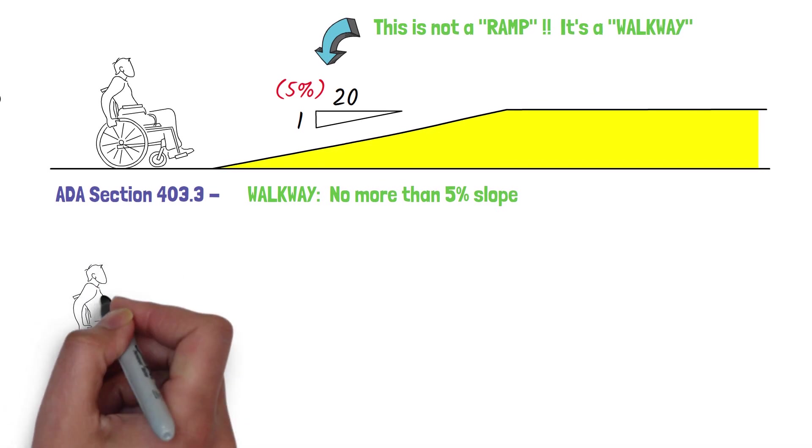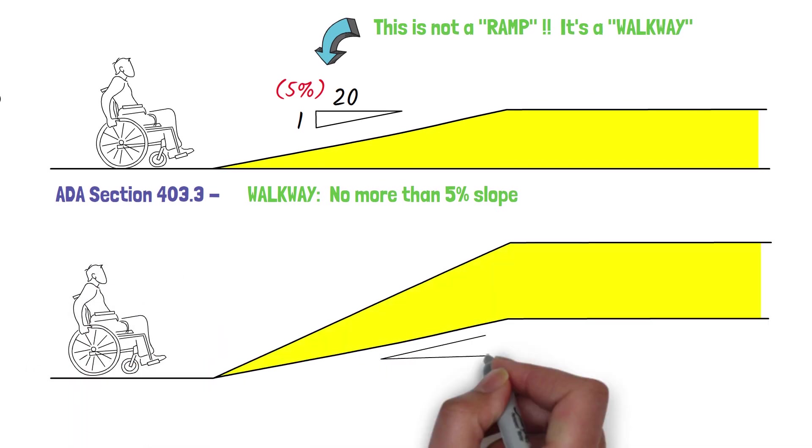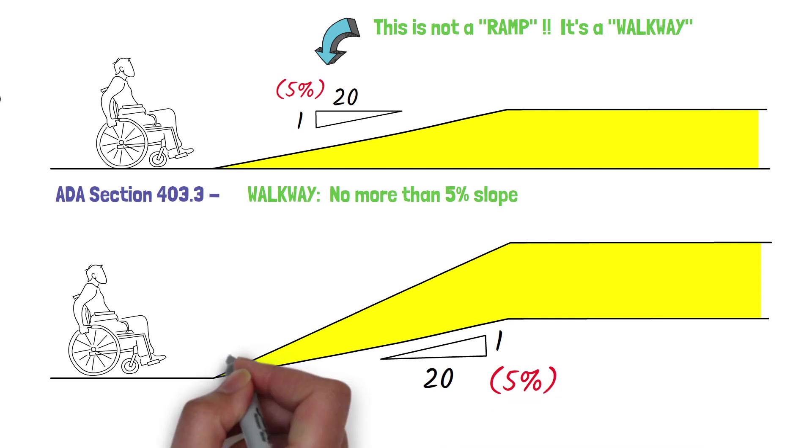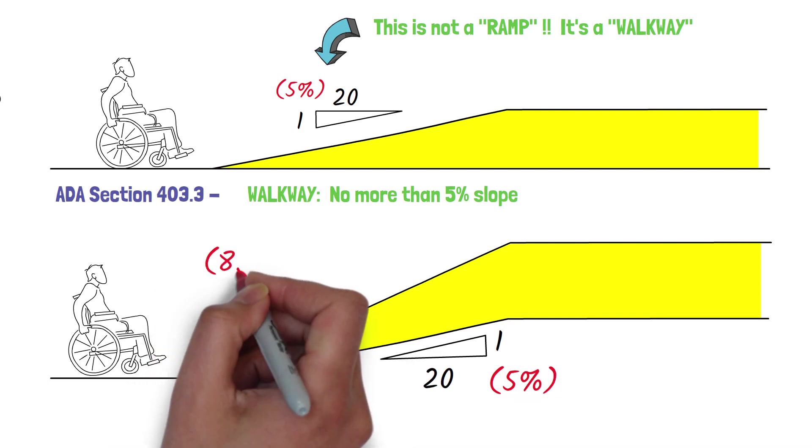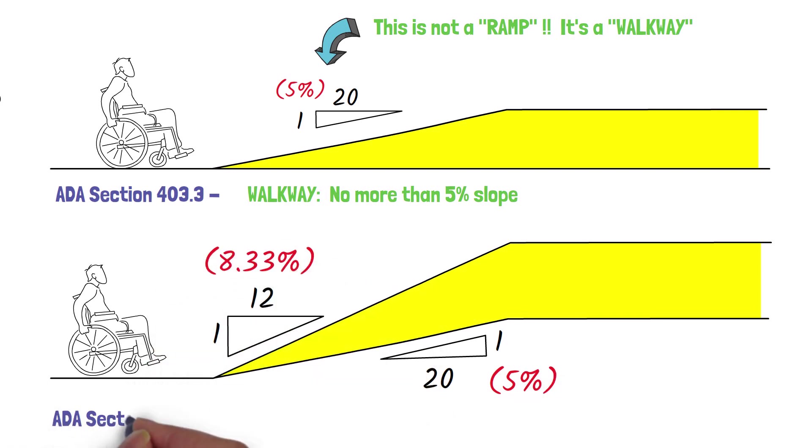If your path of travel, however, has a walkway with a slope that is more than 1 in 20 or 5%, and up to 1 in 12 or 8.33%, then guess what? Per ADA Section 405.2, you have a ramp.